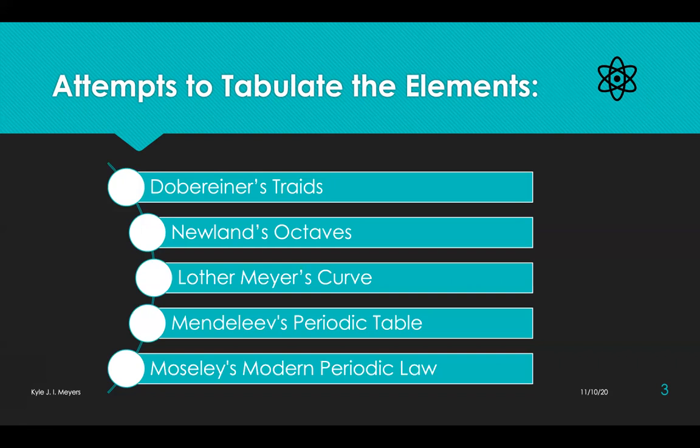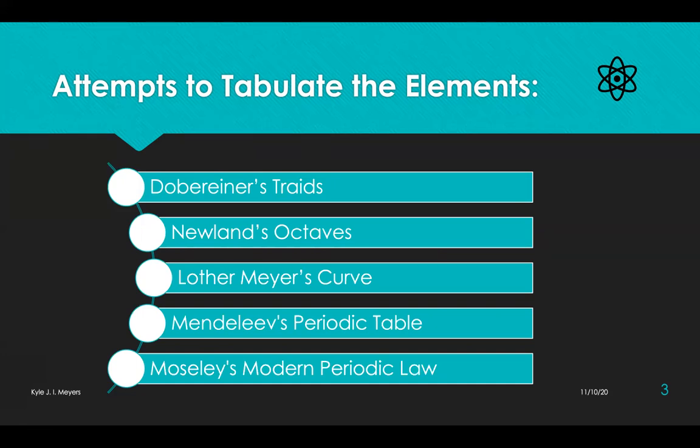Why do all of these fail? The predominant reason being that as newer elements were discovered, it became difficult to incorporate those elements into the given table or the given design or the given trend observed. As a result, each and every succeeding table or classification failed.